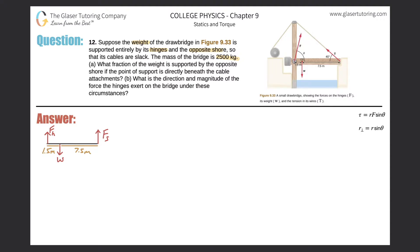Letter A. What fraction of the weight is supported by the opposite shore if the point of support is directly beneath the cable attachments? Alright, so here's that picture. They're talking about the weight of this drawbridge right here being supported by the hinge here, and this shore over here.